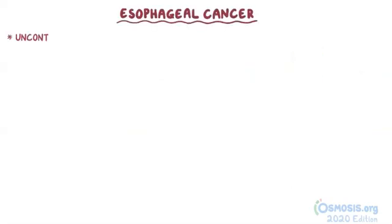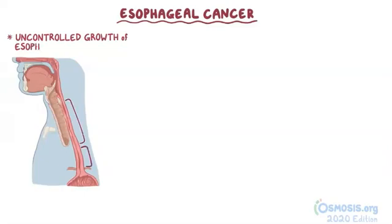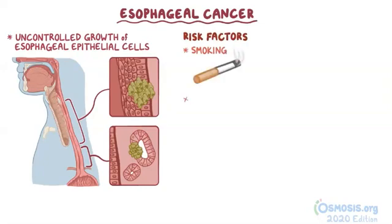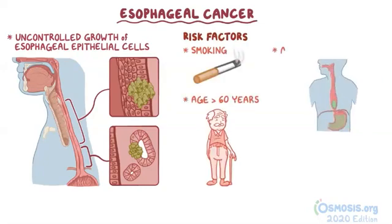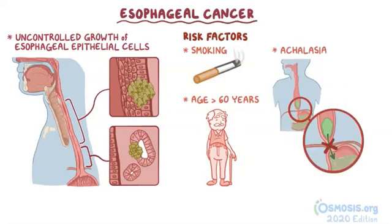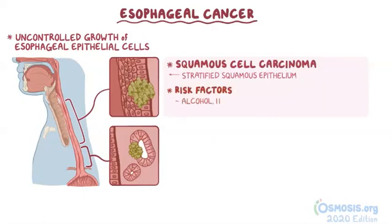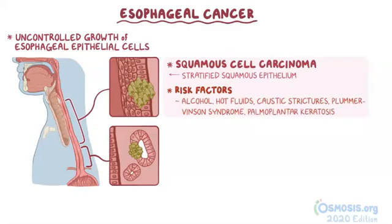As a quick recap, esophageal cancer is the uncontrolled growth of esophageal epithelial cells. Risk factors for both types of cancer include smoking, age over 60 years, and achalasia. Squamous cell carcinoma arises from the stratified squamous epithelium, with specific risk factors including alcohol, hot fluids, caustic strictures, Plummer-Vincent syndrome, and palmoplantar keratoderma.